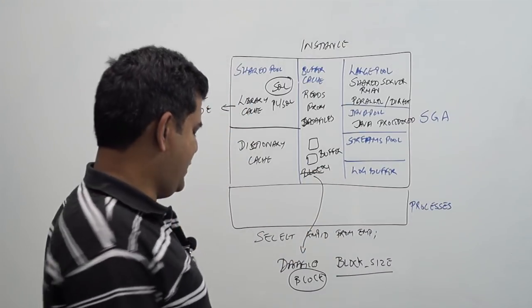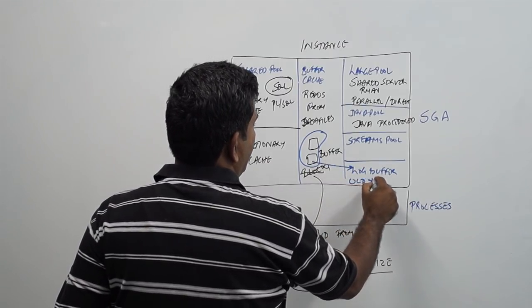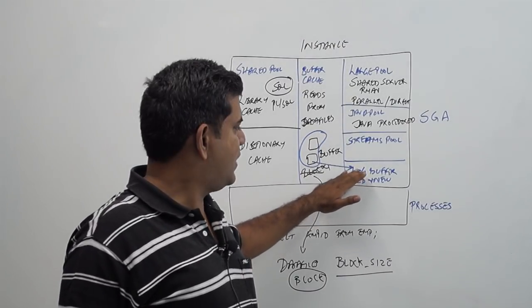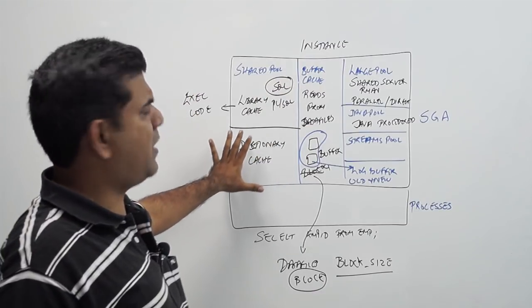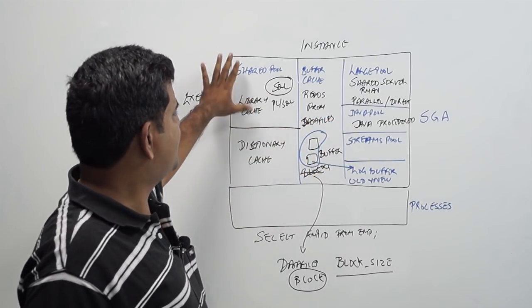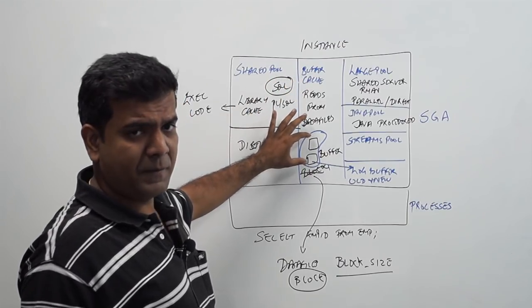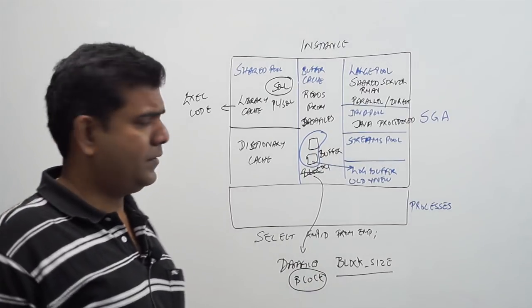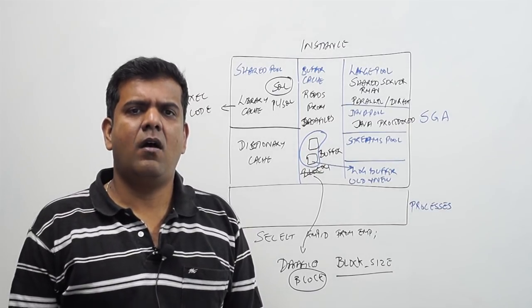Log buffer, as and when you make changes to rows, old and new values are kept within the log buffer, which will later be written into the redo log groups. So, overall summary of my memory structures. These are the primary memory structures. There are other memory areas that are put to use. Shared pool, made up of library cache and dictionary cache. Buffer cache, made up of buffers from the data files, large pool, java pool, streams pool and log buffer. So, this is a summary of the primary memory components in the SGA of an Oracle instance.